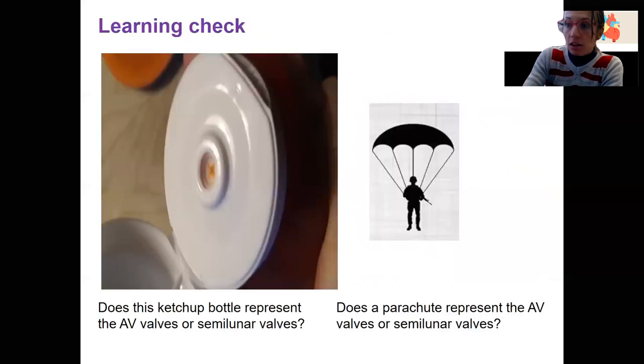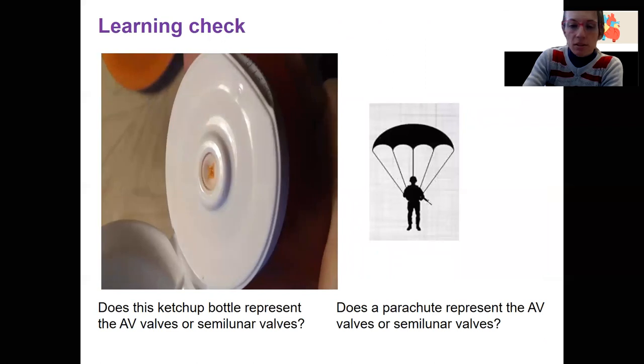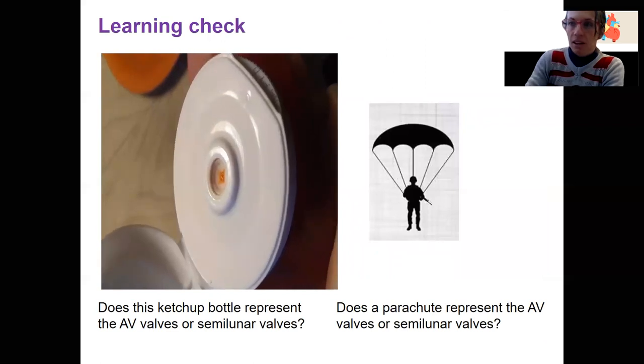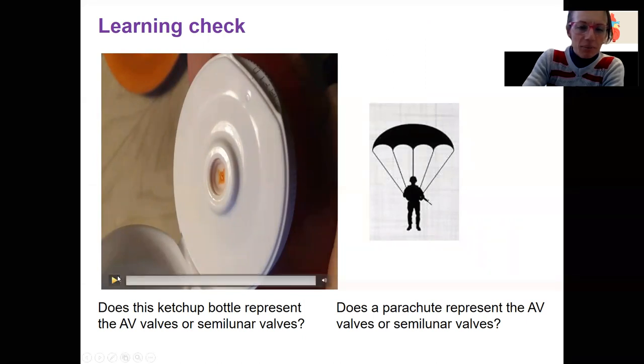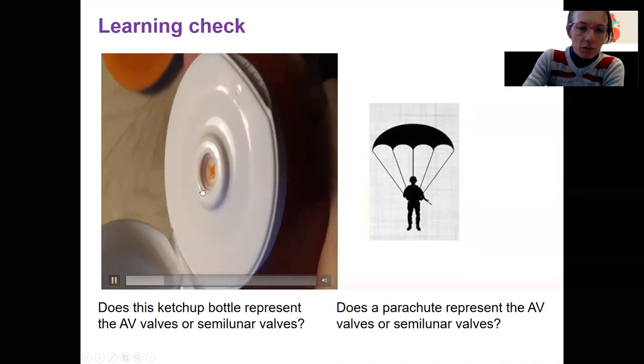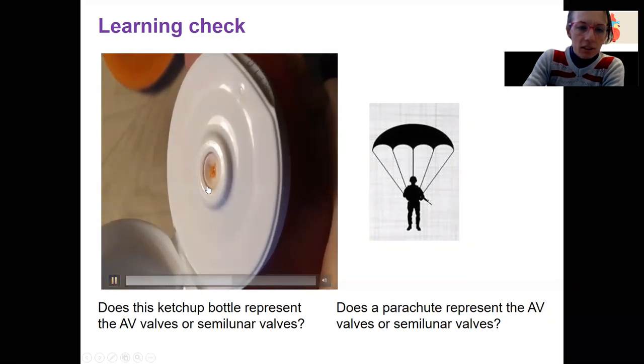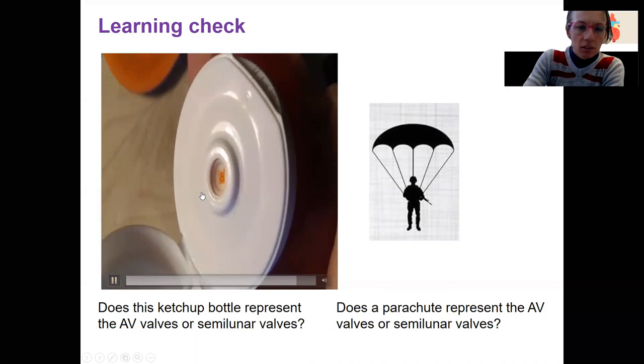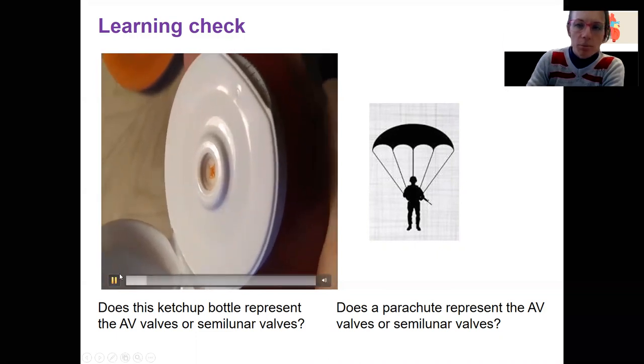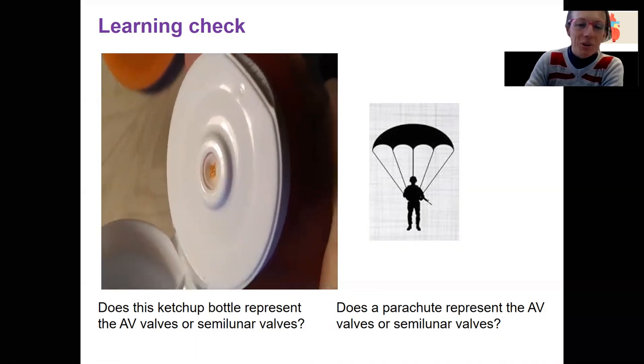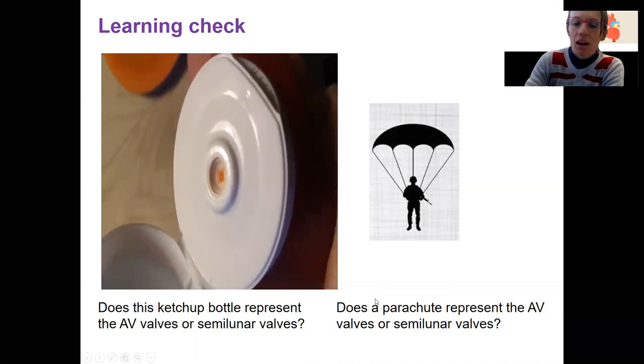Now, learning check. Which one of these corresponds to which type of valves? It's a little video there. This is a ketchup bottle, and I'm squeezing the ketchup bottle and forcing this little, it's air in this case, but you could imagine ketchup or blood being forced out. Which one's which here?